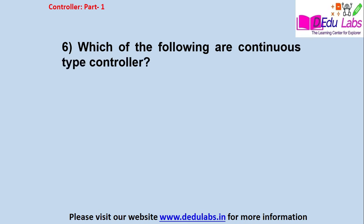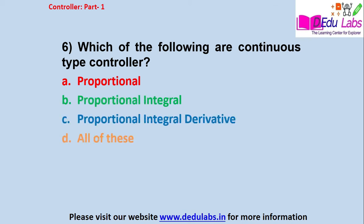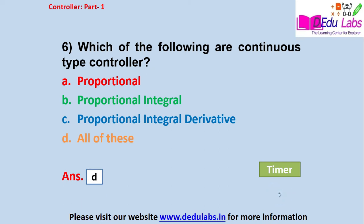Question number 6: which of the following are continuous type controllers? Option A: proportional; Option B: proportional integral; Option C: proportional integral and derivative; Option D: all of these. The answer is Option D, all of these. Proportional, PI, and PID are all classified into the category of continuous controllers — every unique error generates a unique output, so they are called continuous type controllers.